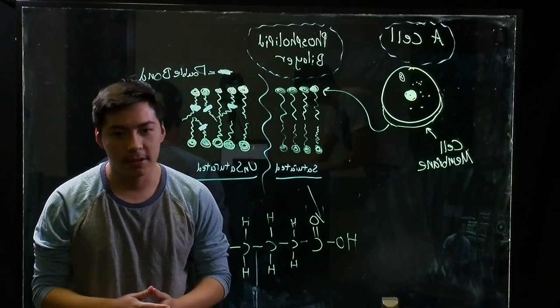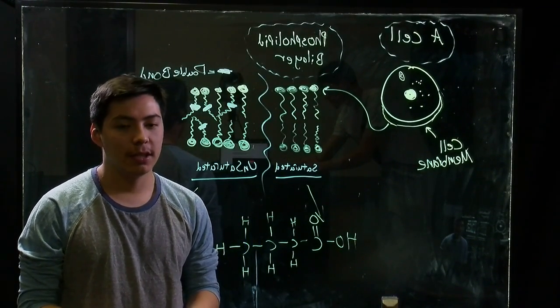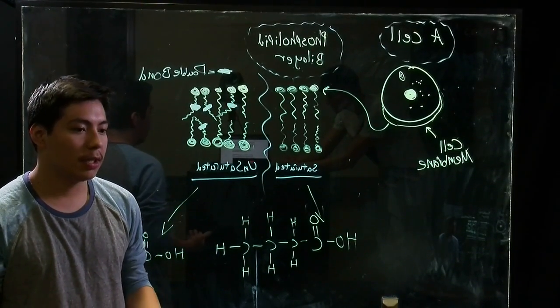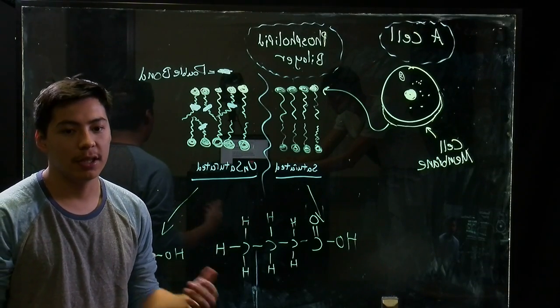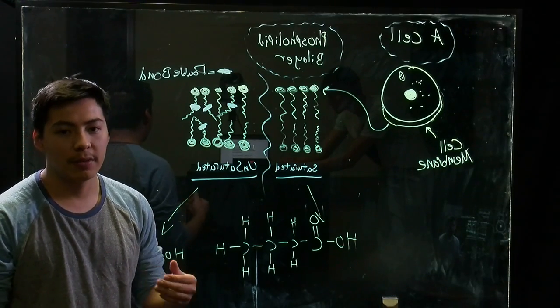When we talk about factors that affect the cell membrane's fluidity, there are a couple that we need to keep in mind. One of these is the length of the tails—the longer the tail is, the more interactions it will have, and so the fluidity will actually decrease. Another one is temperature: as the temperature increases, so does the fluidity.